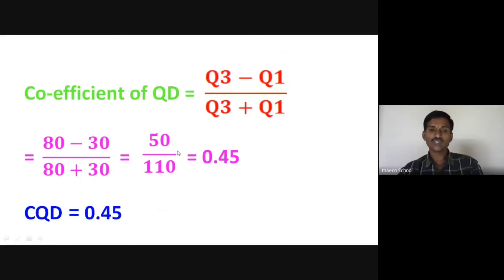When we cancel this, we will get 0.45. If we calculate more precisely: 50 divided by 110, we get 0.4545. Taking two digits, the coefficient is 0.45.